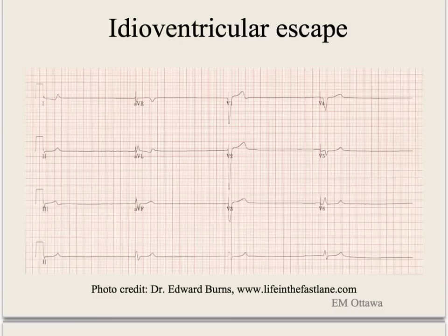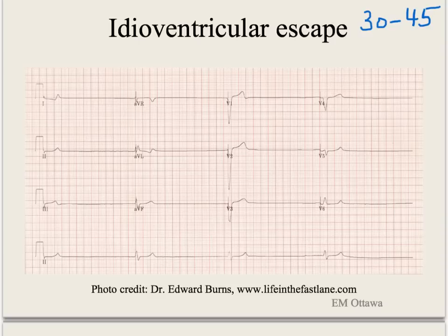This next rhythm is an idioventricular escape rhythm. The rate is about 30 to 45 usually, and it is generated in the His bundle. Since it is not generated from the SA node, nor are there any contractions of the atrium, there will be no P waves, and therefore no way to measure the PR interval, nor any conclusion between P and QRS complexes. The RR interval is regular and the QRS complexes are narrow.